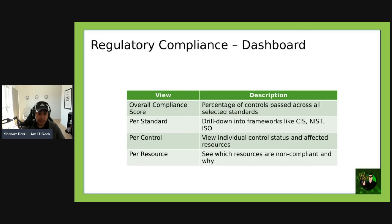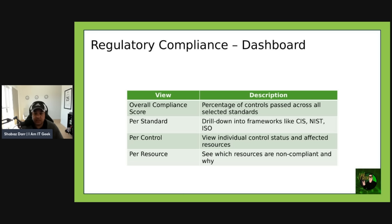Regarding the dashboard itself, you have different views: the overall compliance score showing the percentage of controls passed across all standards; a per-standard drill-down into frameworks like NIST, CIS, and ISO; a per-control view showing individual control status and affected resources; and a per-resource view where you can see which resources are non-compliant and why.